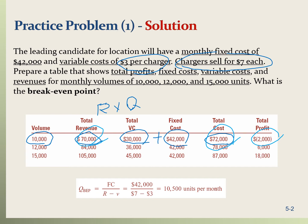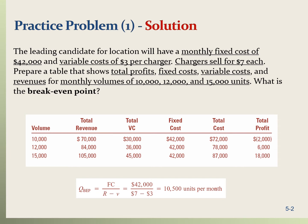Next, we go to volume 12,000. The total revenue is $7 multiplied by 12,000, that's $84,000. Total variable cost is $3 per unit multiplied by 12,000, that's $36,000. Fixed cost is the same, and the total cost is $36,000 plus $42,000, which is $78,000. The profit is $84,000 minus $78,000, and that's $6,000 profit. So you can see: negative $2,000 for 10,000 volume and positive $6,000 for 12,000. This means the break-even point must be somewhere between 10,000 and 12,000.